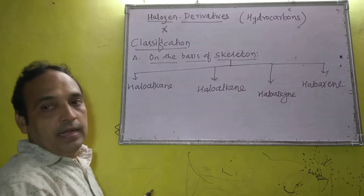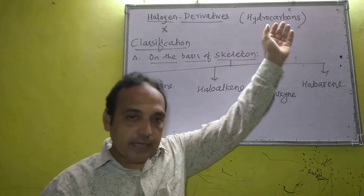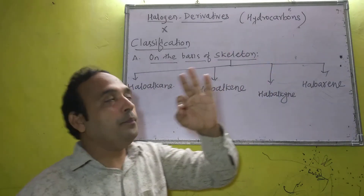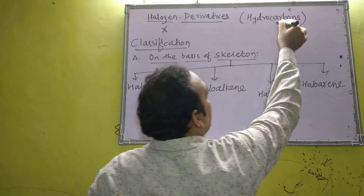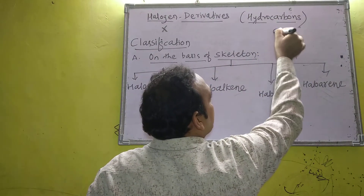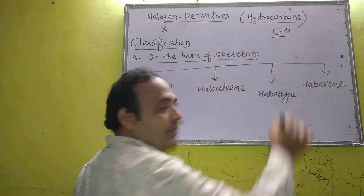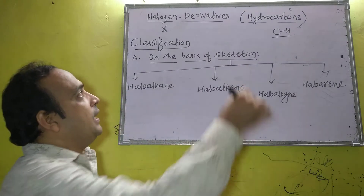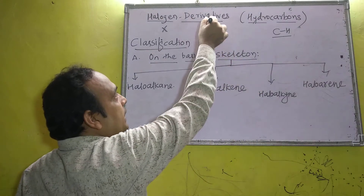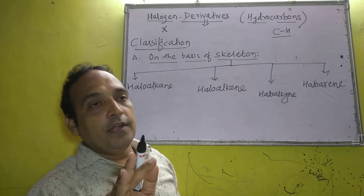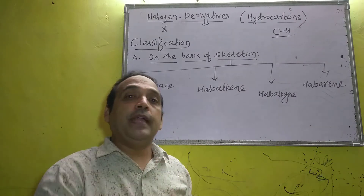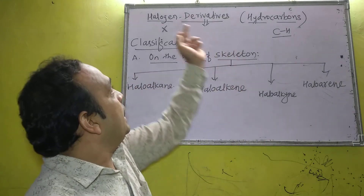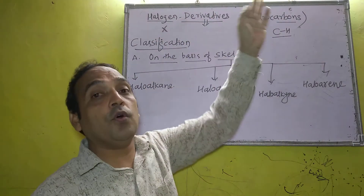The symbol used for halides is X. The second part is hydrocarbon — meaning compounds where bonds are present between carbon and hydrogen. The third concept is 'derivative,' which means to derive or obtain.